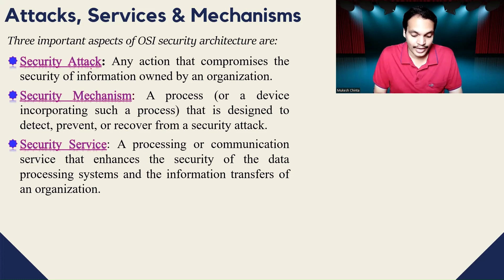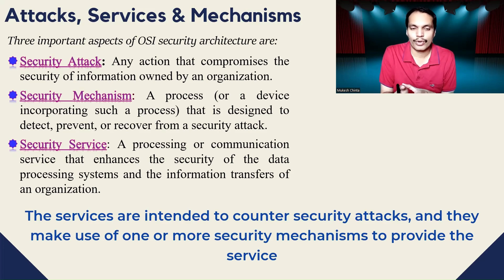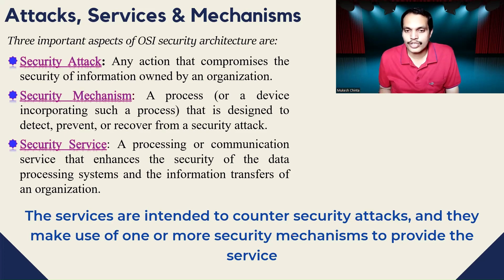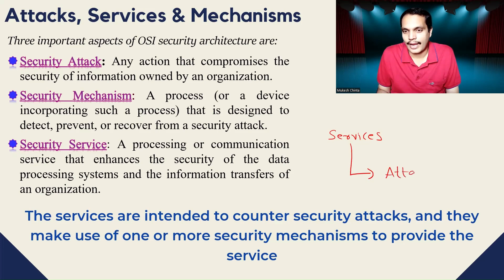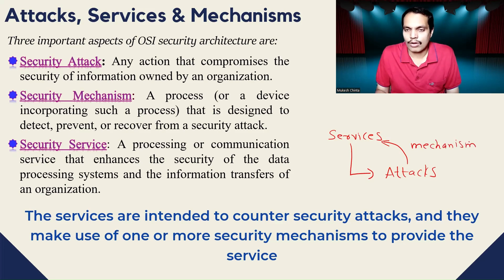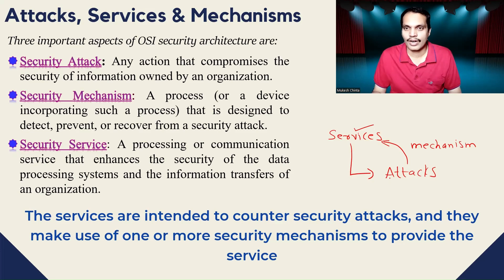To recap, there are three terms defined under the OSI security architecture: security attack, security mechanism, and security service. To put them into perspective, these three terms come together in such a way that services are intended to counter security attacks, and they make use of one or more security mechanisms to provide those services. We need services to ensure protection against attacks, and to implement those services we may use one or more mechanisms — individually or coupled together.